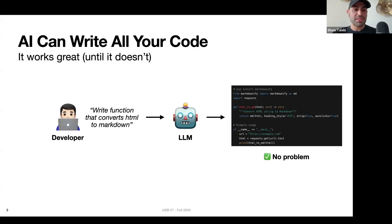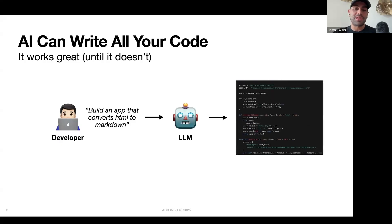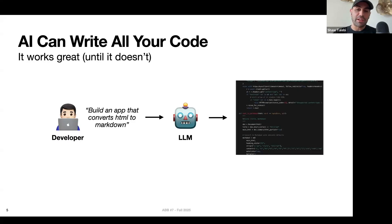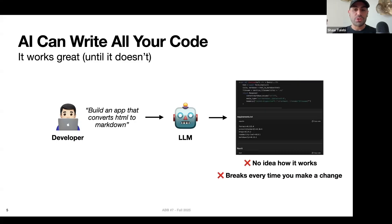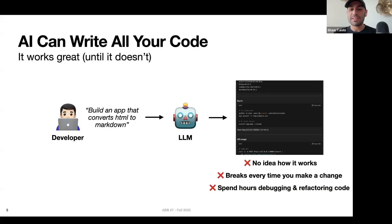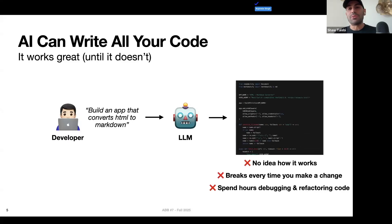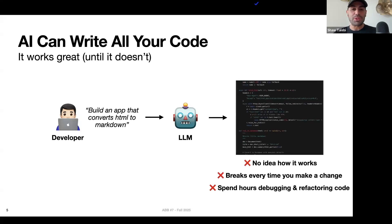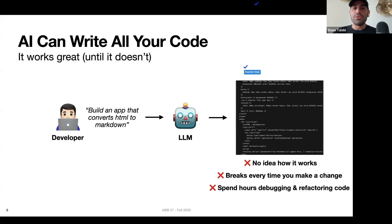But let's say we want to do something more sophisticated, like build an entire app that converts HTML to markdown. Even though we just changed a few words in the ask, this is a very different situation. The LLM generates a lot of code, but now maybe we have no idea how it works. Every time we try to tweak the front end the codebase breaks, we get errors we don't understand, and we end up spending hours debugging — longer than it would have taken to build from scratch. So even though AI can write all the code, it doesn't mean we're moving any faster.